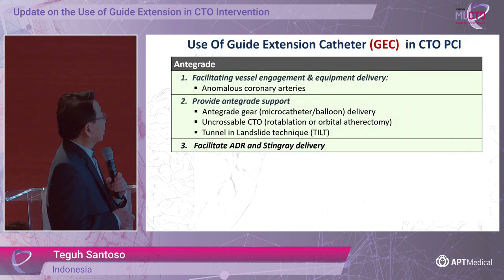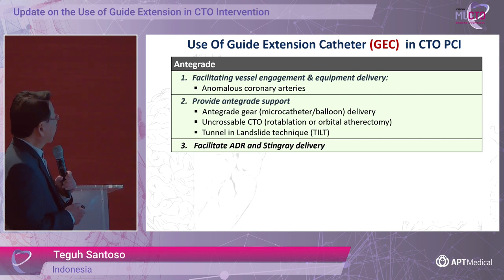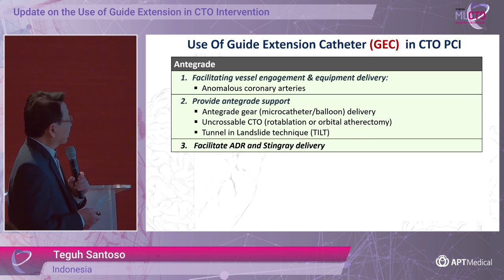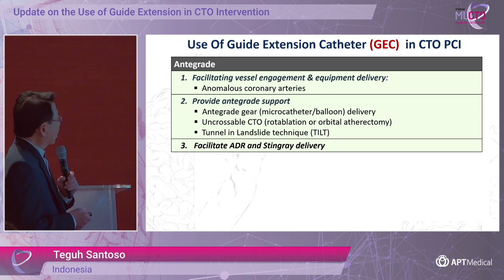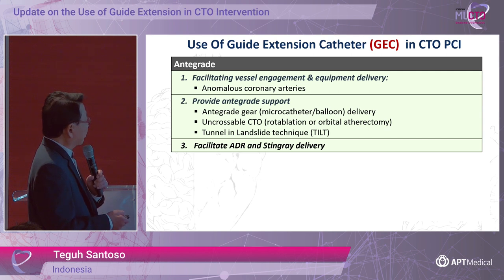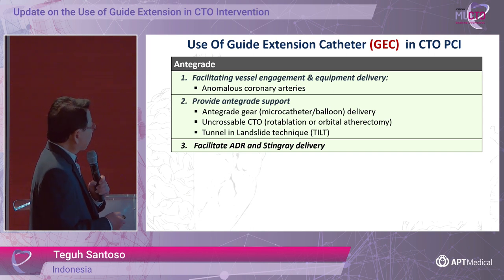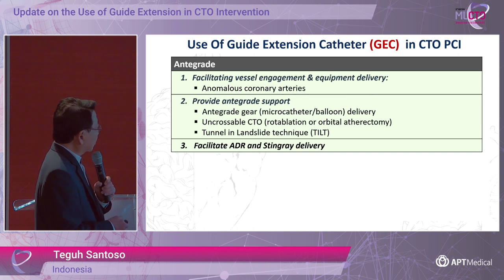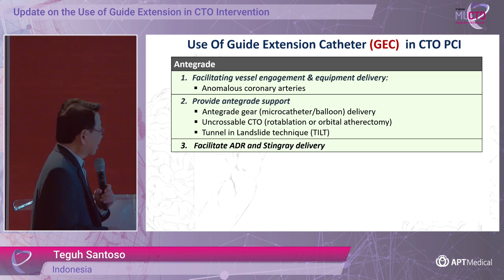In summary, the use of guide extension catheter in CTO PCI can be classified as follows: first, to facilitate ostial engagement and equipment delivery, especially in patients with anomalous coronary arteries; second, to provide antegrade support for micro catheter or balloon delivery; third, to provide support in cases with uncrossable CTO, allowing us to use rotational and orbital atherectomy and the tunnel and landslide technique.